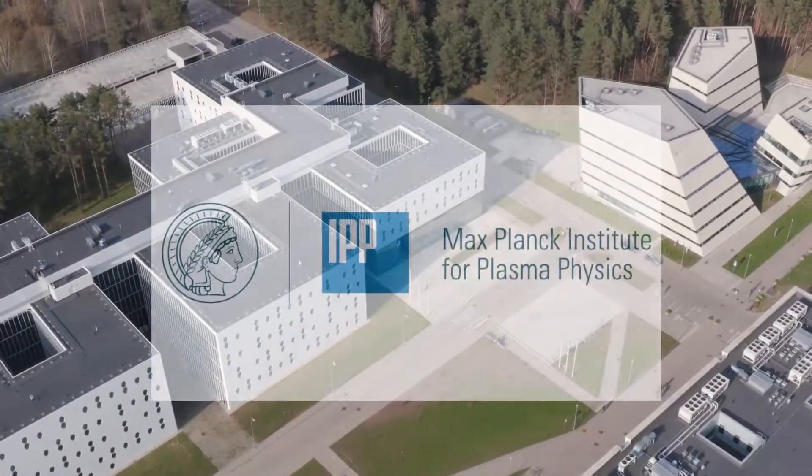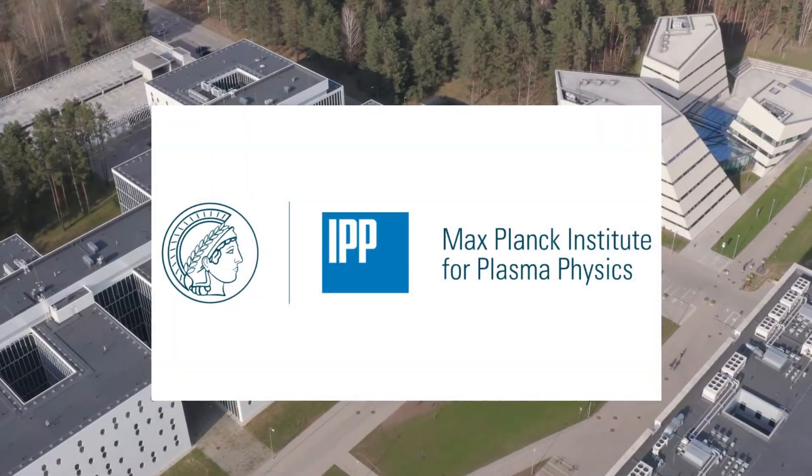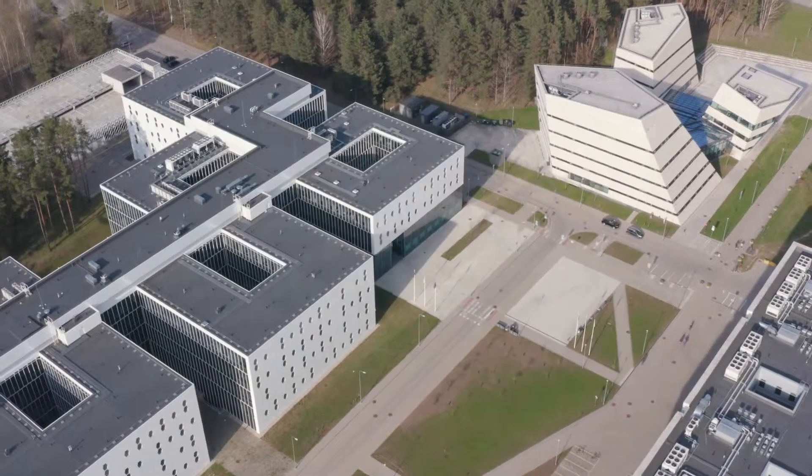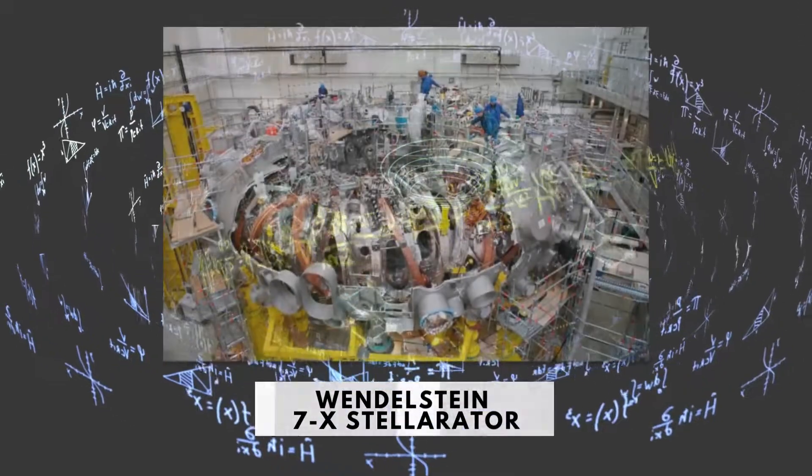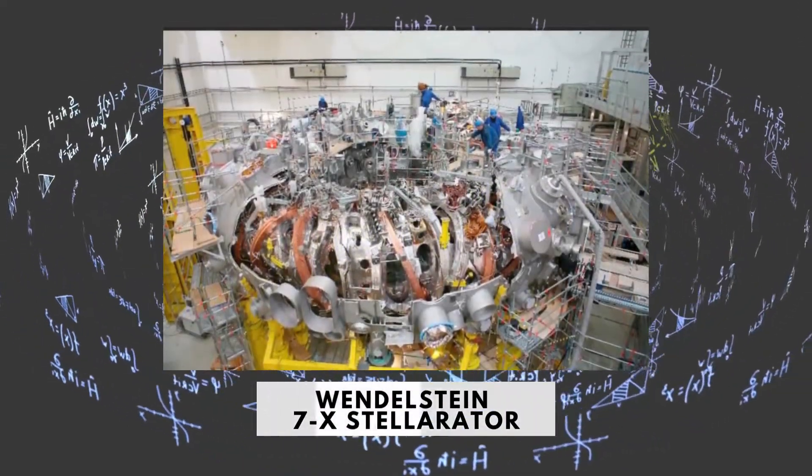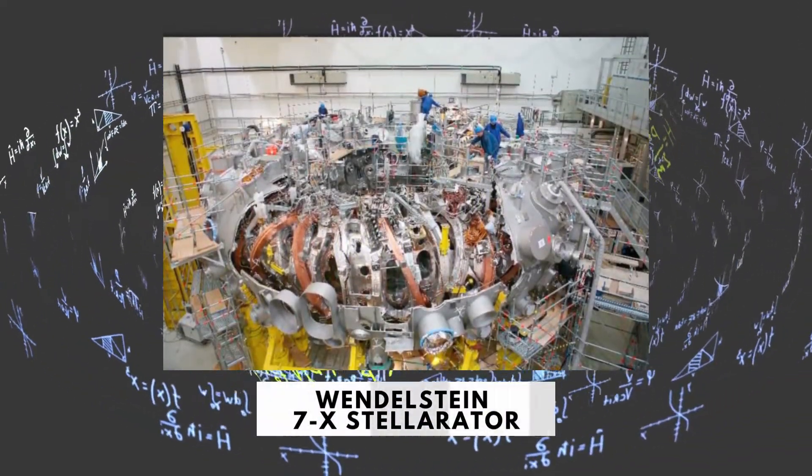In a device, researchers from the Max Planck Institute for Plasma Physics in Germany powered up an experimental reactor and created hydrogen plasma. The Wendelstein 7X Stellarator is the name of this particular piece of equipment.